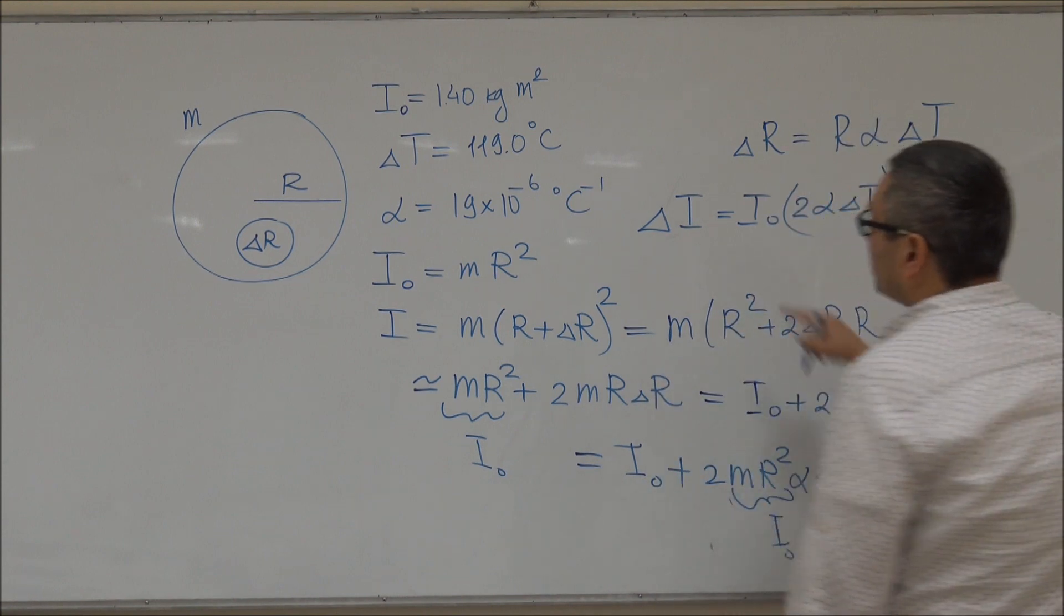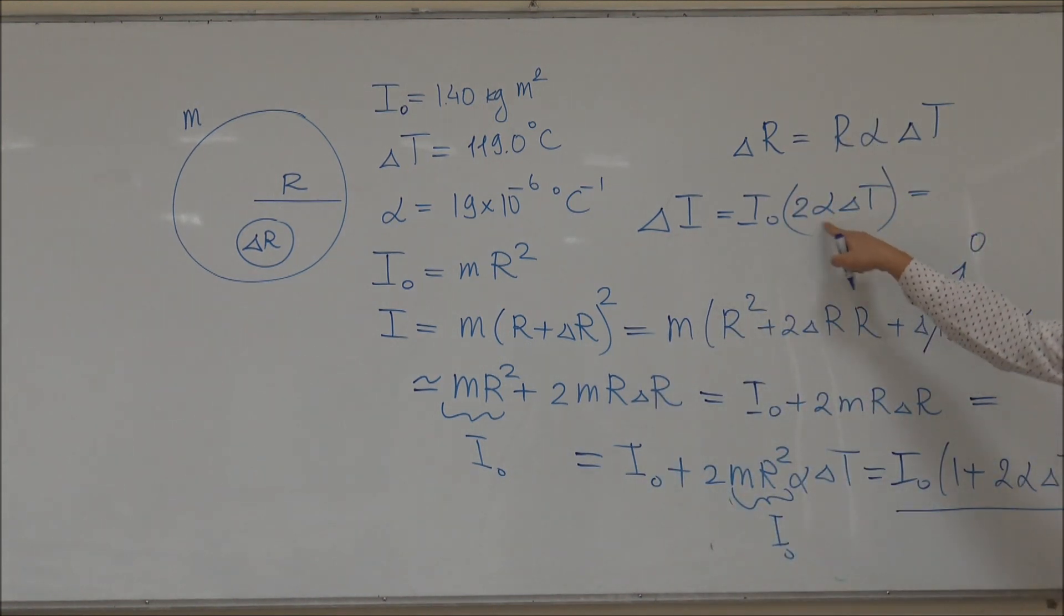If you substitute for the numbers of I₀, α, and ΔT, which are given, the increase in moment of inertia is 6.33 × 10⁻³ in kilogram meter squared. So this is the increase in the moment of inertia of the brass wheel.